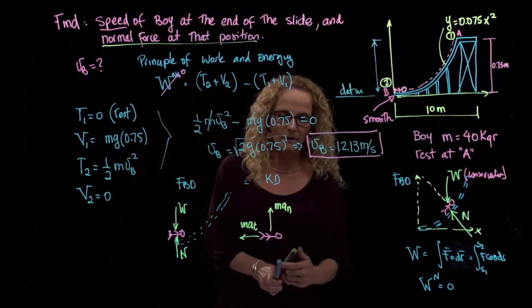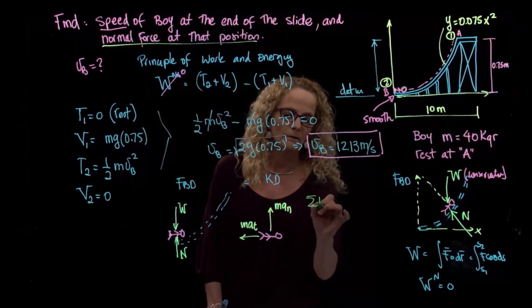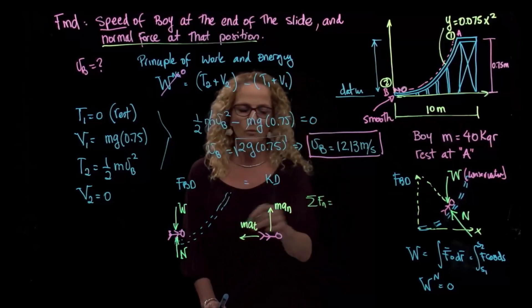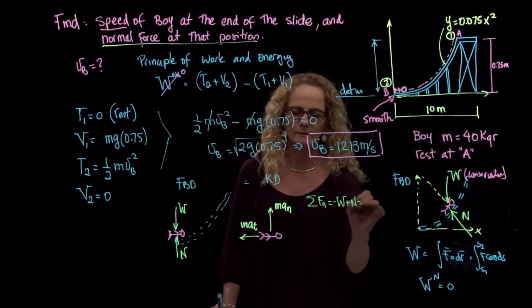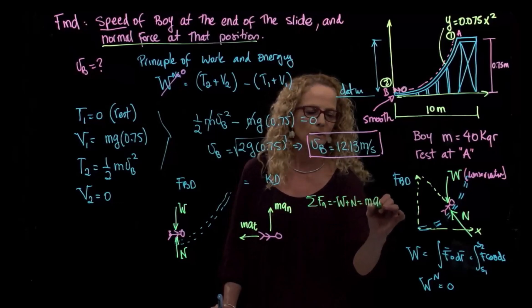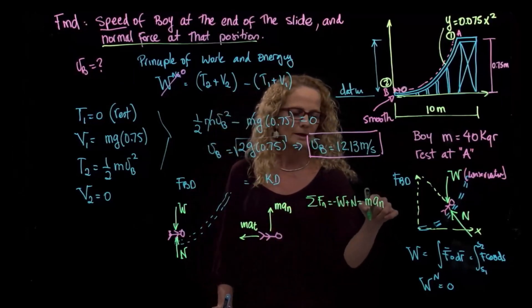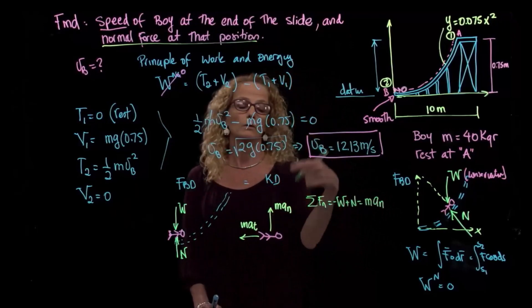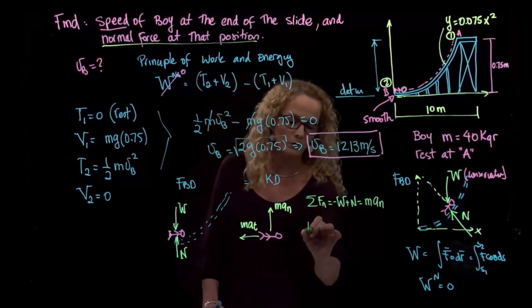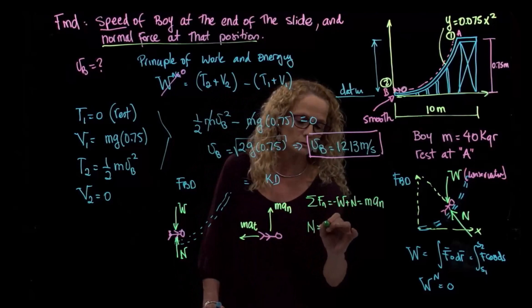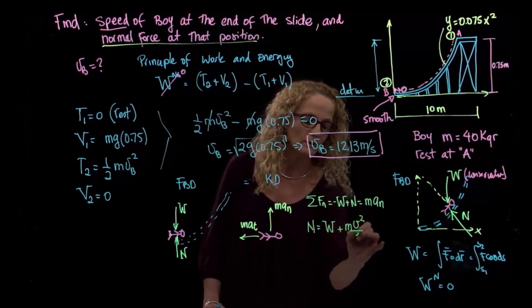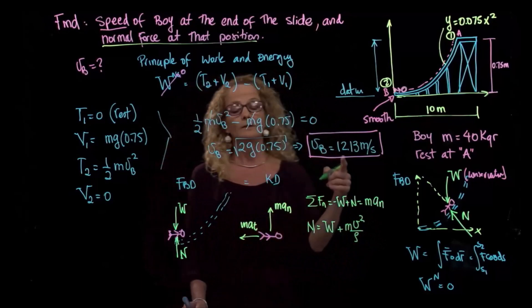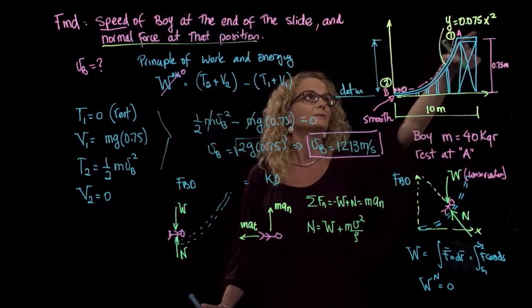So if I add forces in the normal direction, I found that negative weight plus normal is equal to mass times normal acceleration. And as you recall, the normal acceleration is the velocity squared over radius of curvature. So my normal force will be equals to the weight plus mass times velocity squared over radius of curvature. But I am not given the radius of curvature. I am given the equation.